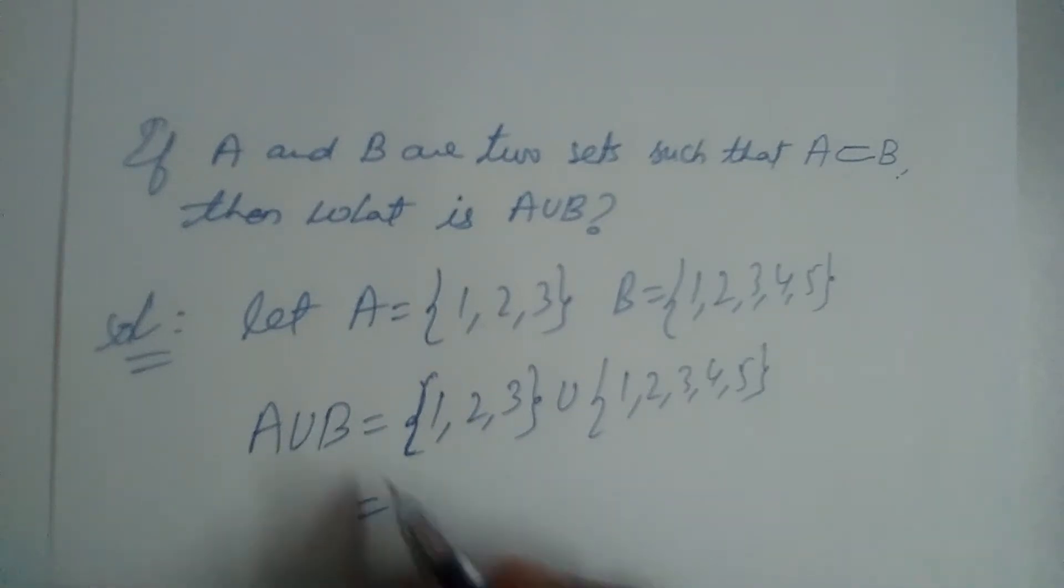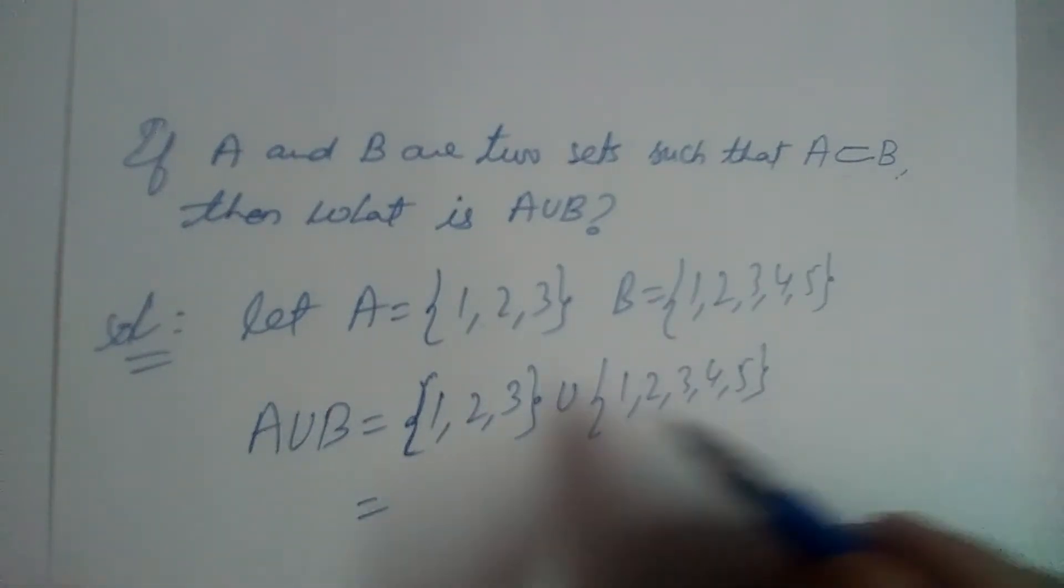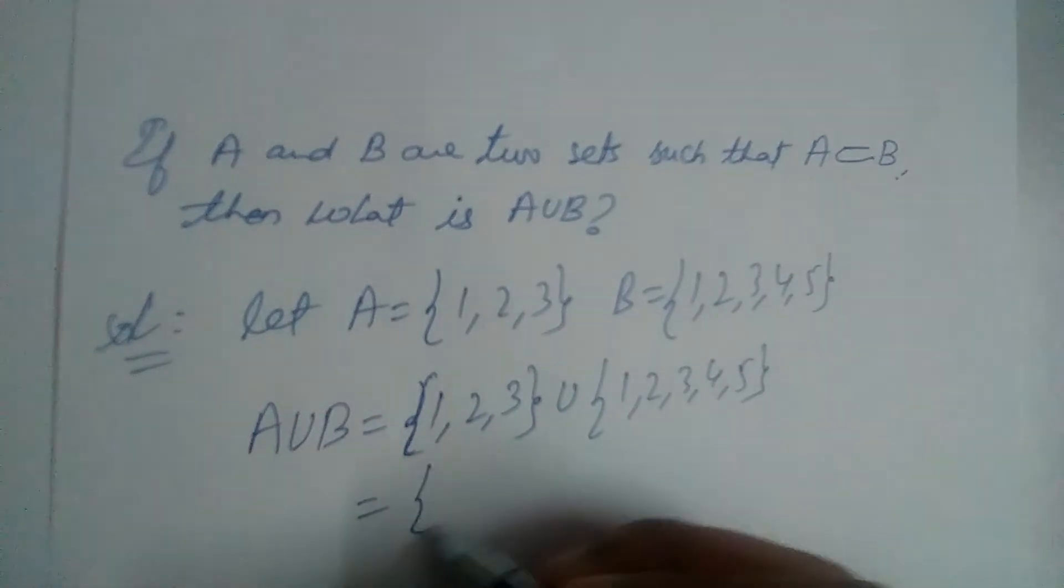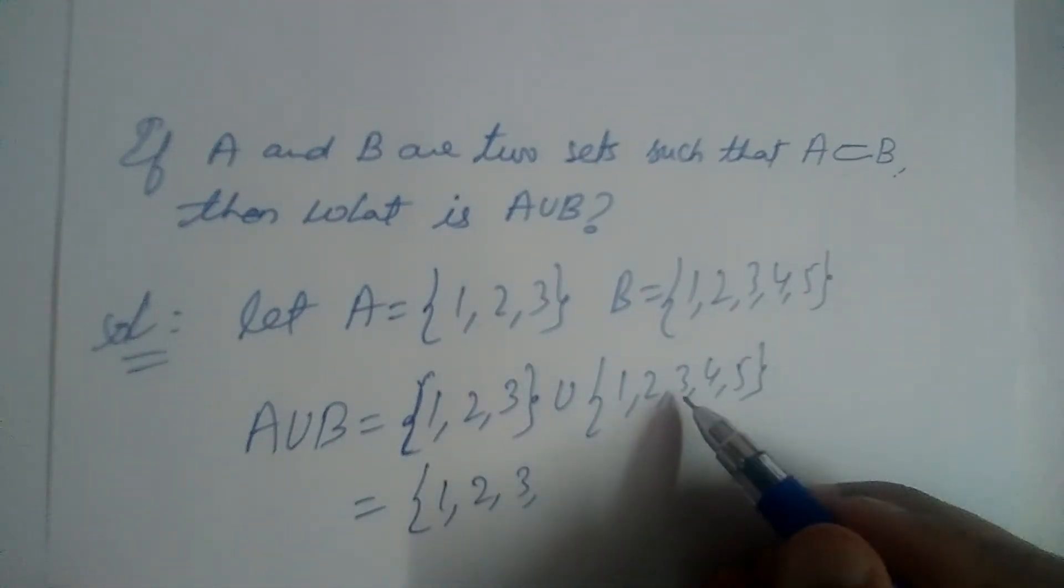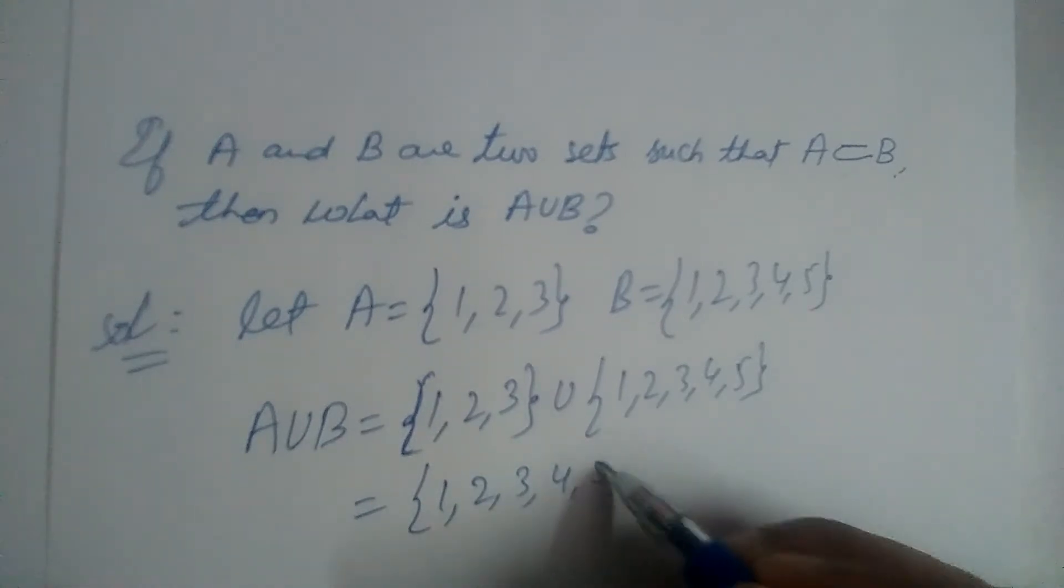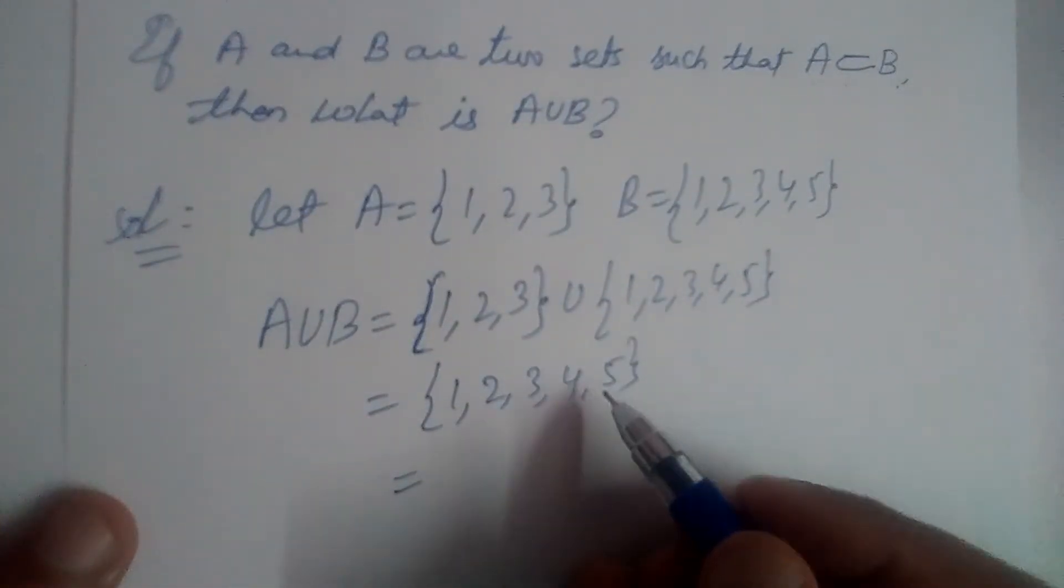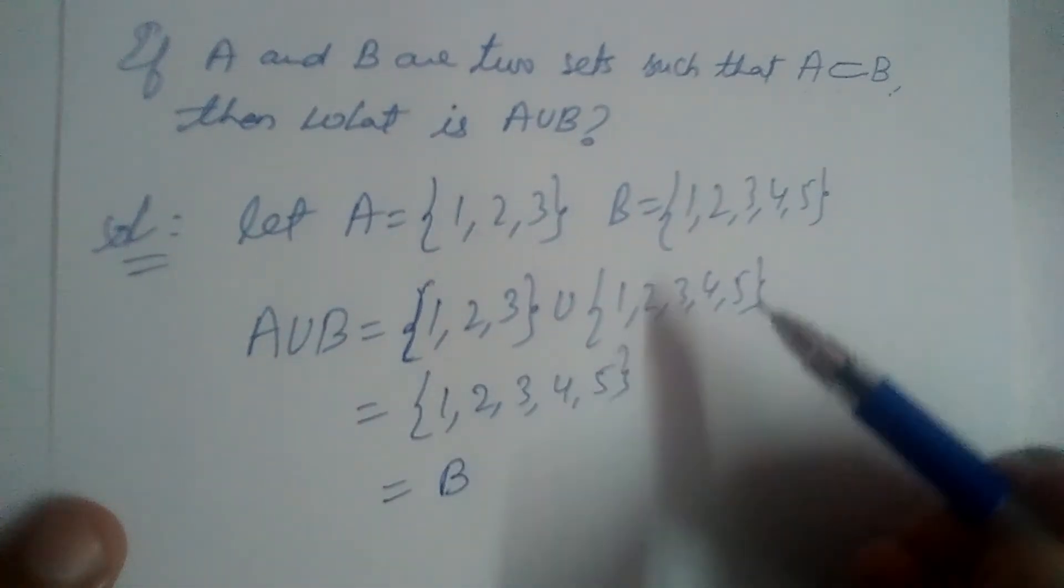So what is A union B? Union means everything that is present in A and everything that is present in B should be written. It should not be repeated. 1, 2, 3 don't repeat again, right? 4 and 5. So 1, 2, 3, 4, 5. We got B again, isn't it?